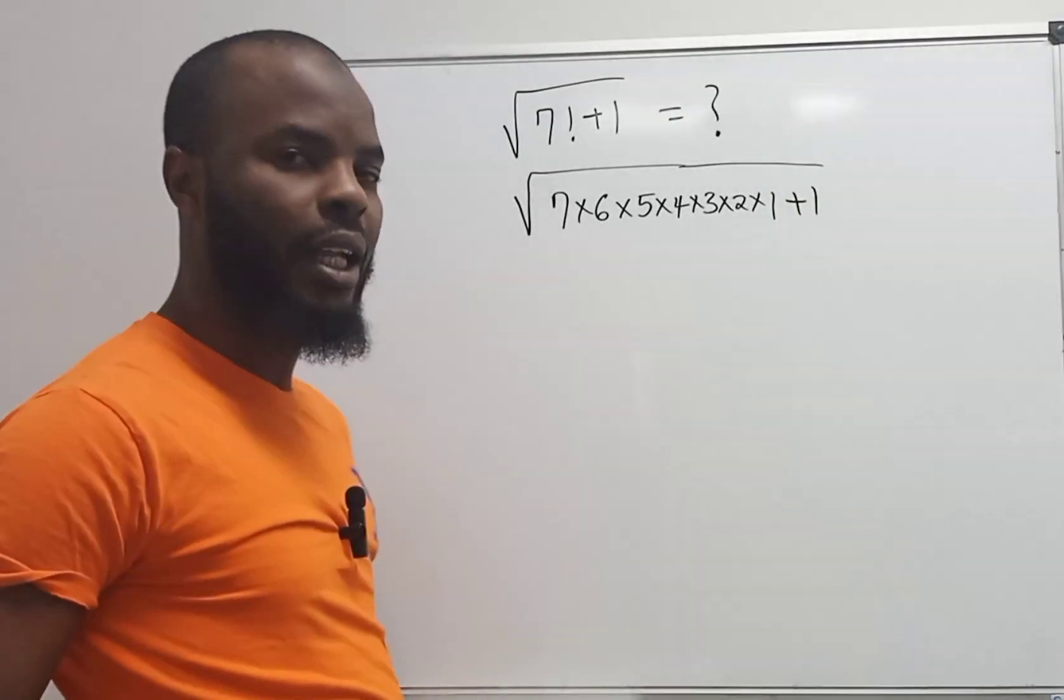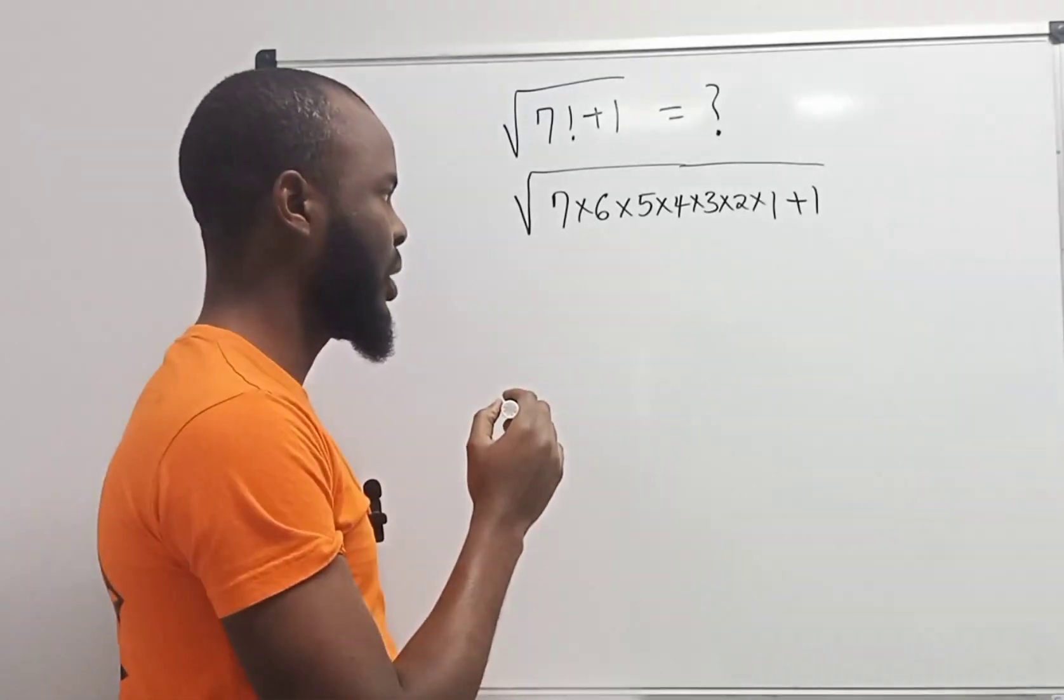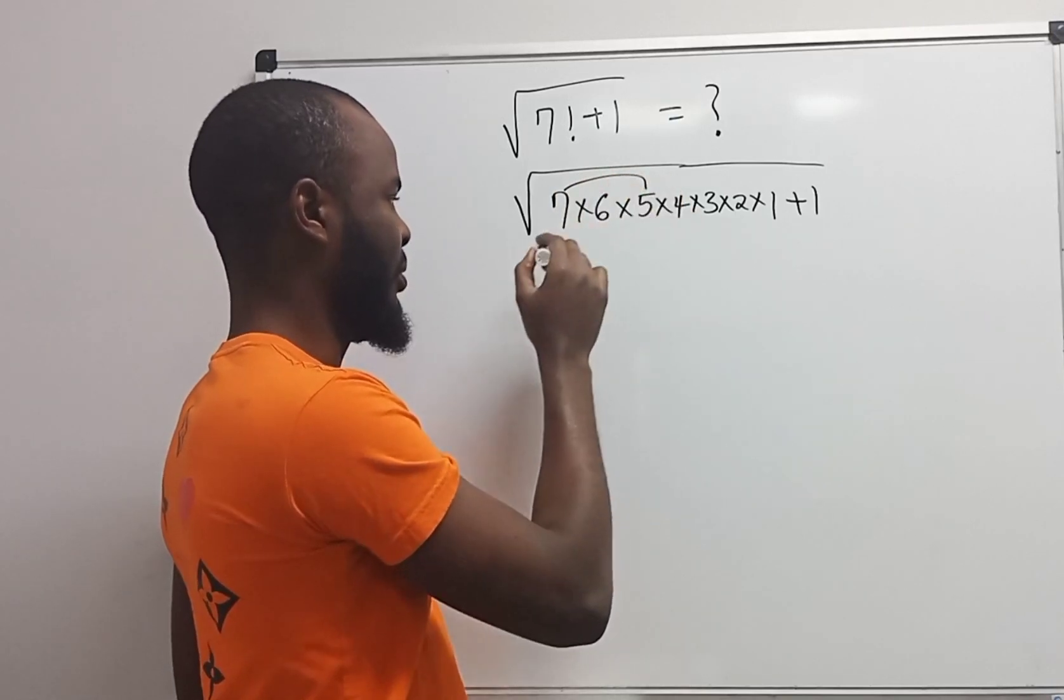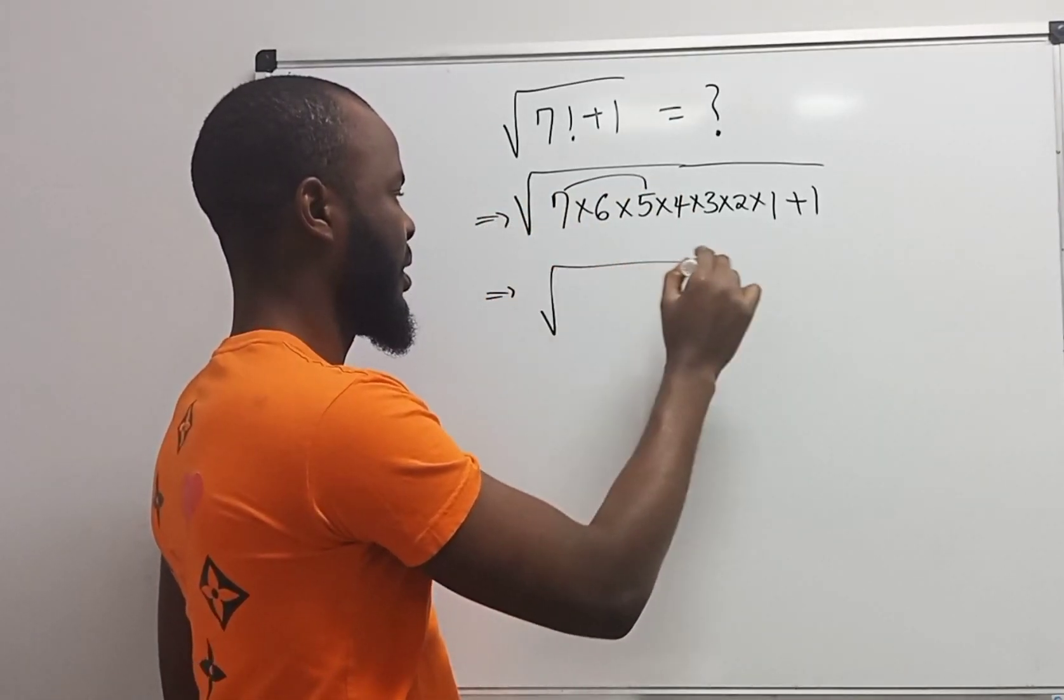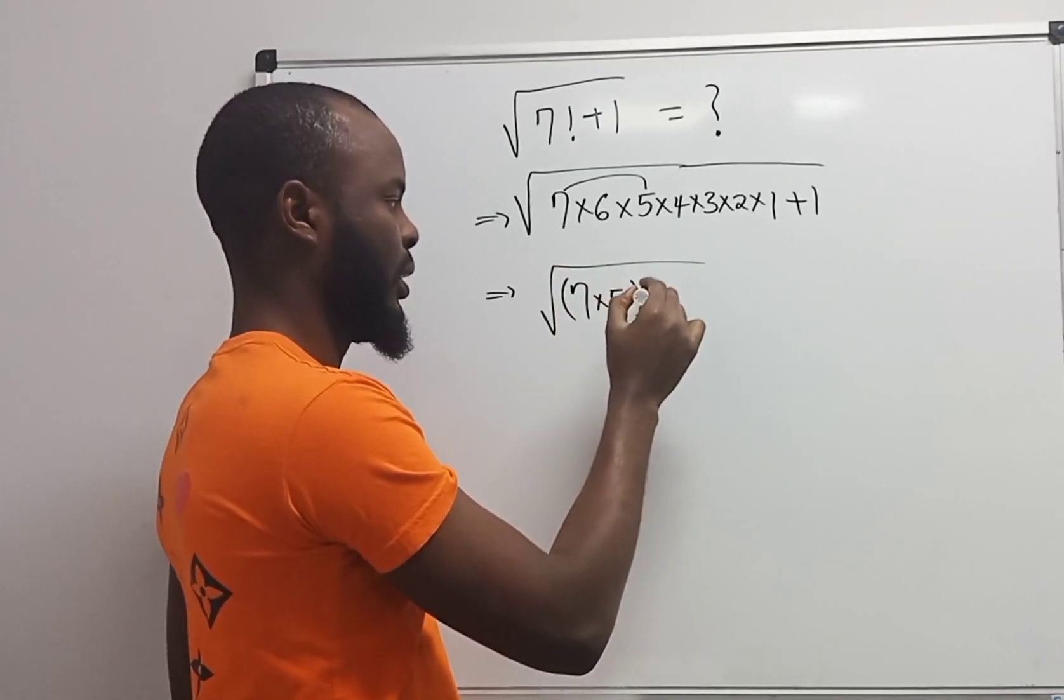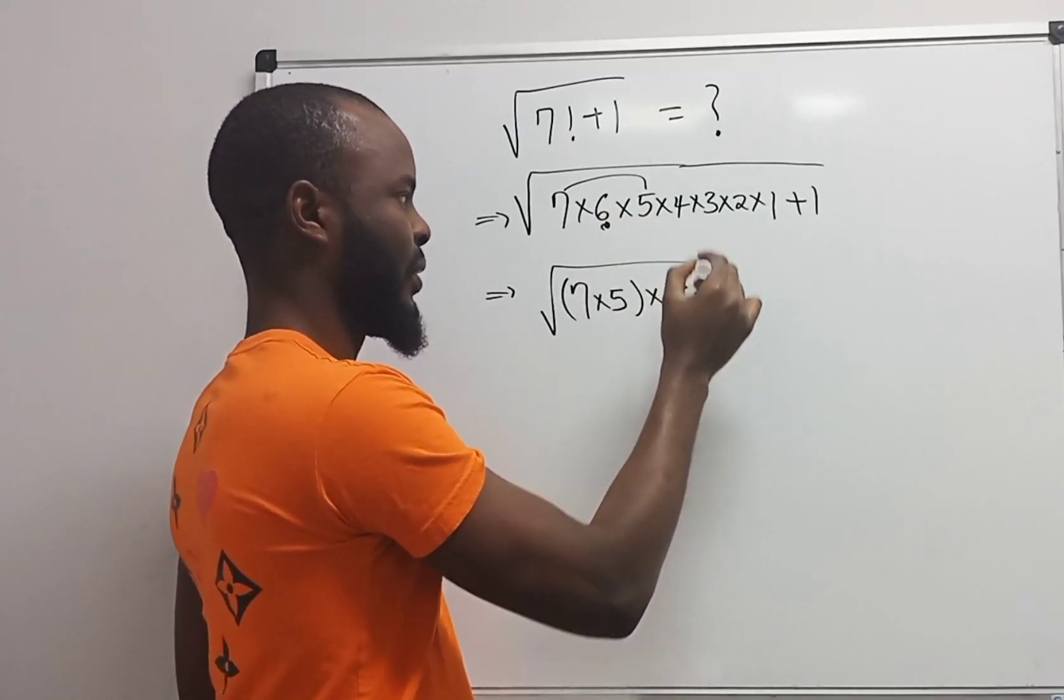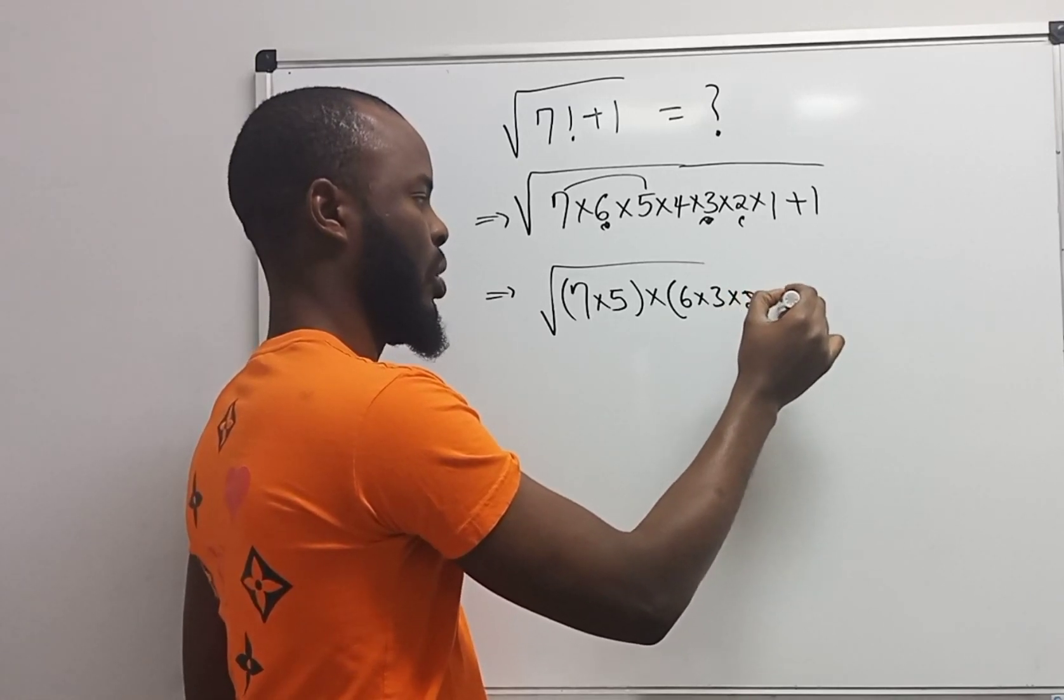Now I'm going to do something here. Let's do it this way. Here I'm having 7 times 5, multiply by 6 times 3 times 2 times 1, multiply by 4, plus 1.